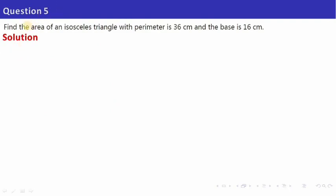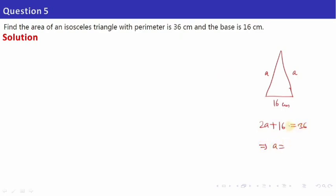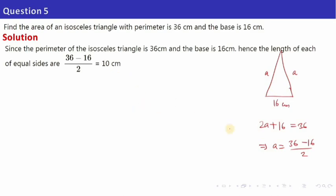The next question says: find the area of an isosceles triangle with perimeter 36 centimetre and base 16 centimetre. In an isosceles triangle there are two equal sides — take them as A and A. Perimeter equals 2A plus 16 equals 36. Solving, A equals 36 minus 16 divided by 2, which gives each equal side as 10 centimetre.